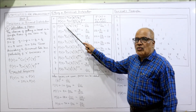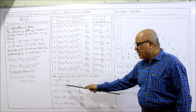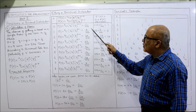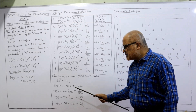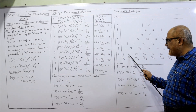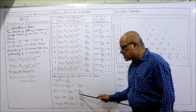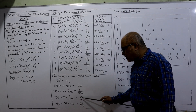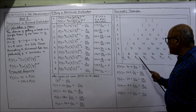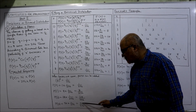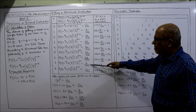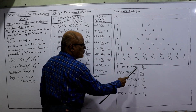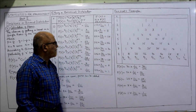P(0) = 8C0 × (1/2)^8 = 1 × 1/256 = 1/256. P(1) = 8C1 × 1/256 = 8 × 1/256 = 8/256. P(2) = 8C2 × 1/256 = 28 × 1/256 = 28/256. P(3) = 8C3 × 1/256 = 56 × 1/256 = 56/256. P(4) = 8C4 × 1/256 = 70 × 1/256 = 70/256. And similarly up to P(8). All these probability values have been calculated.